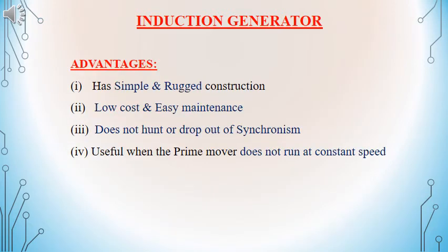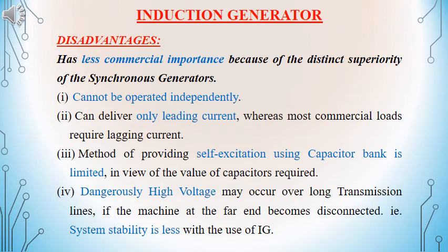Induction generators have few advantages: it is simple, it is rugged in construction, it is low cost and easy to maintain. There is no fear of hunting in operation or going out of synchronism, and it does not require any constant speed of operation. But there are few disadvantages: it cannot be operated independently because it should be either connected to the grid or connected with a capacitor bank. It can operate only at a leading power factor condition, but most of the loads are lagging power factor type.